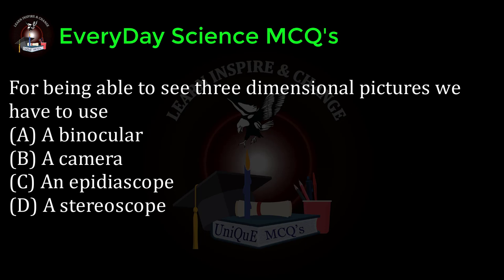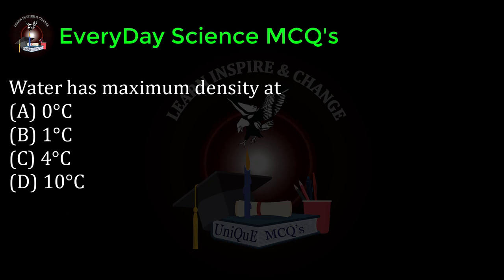For being able to see three-dimensional pictures, we have to use: a) a binocular, b) a camera, c) an epidiascope, d) a stereoscope. Correct answer: d.